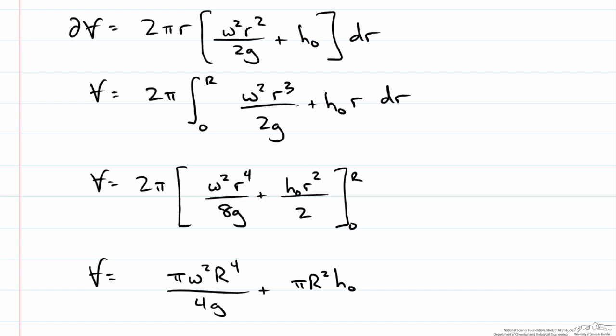Now this volume has to be constant if we haven't lost any water. So this has to be equal to the original amount of water that we had which was πR²H.